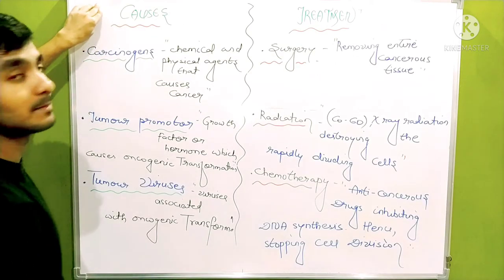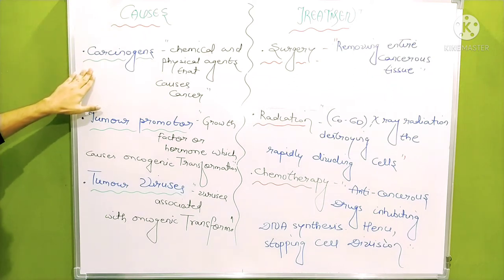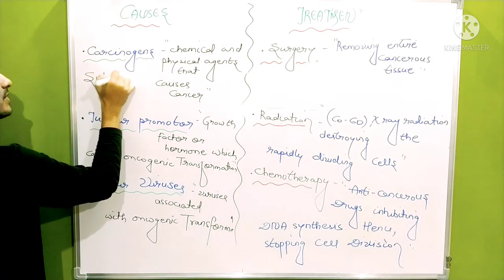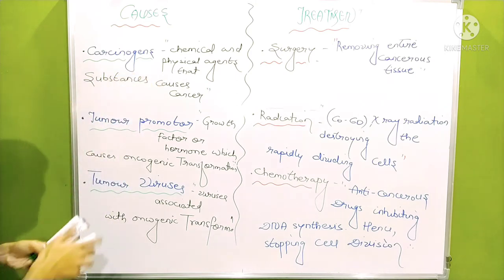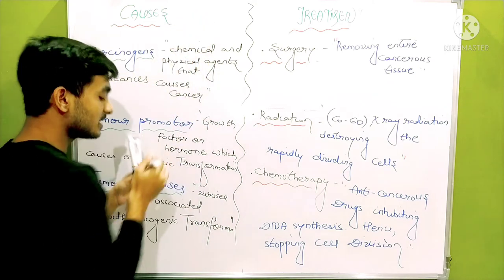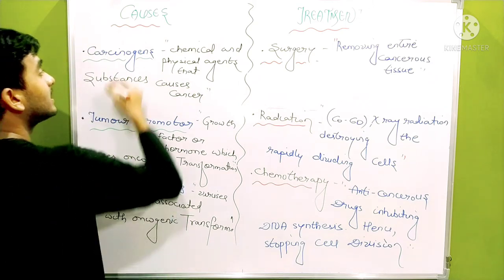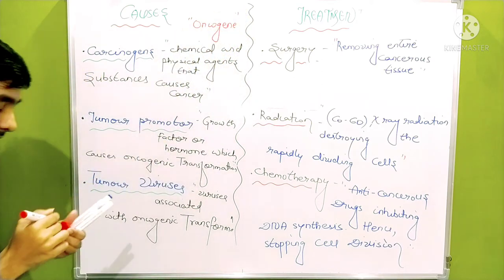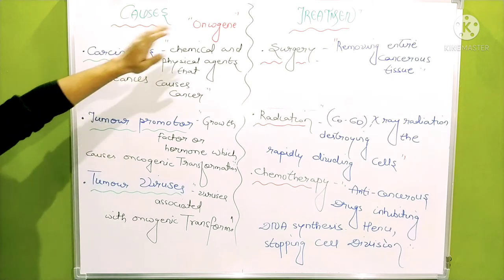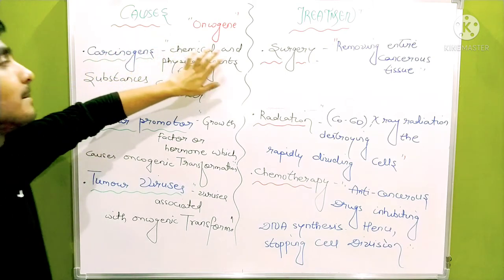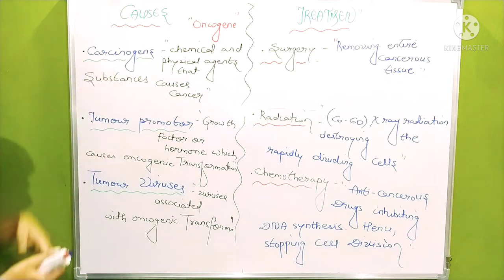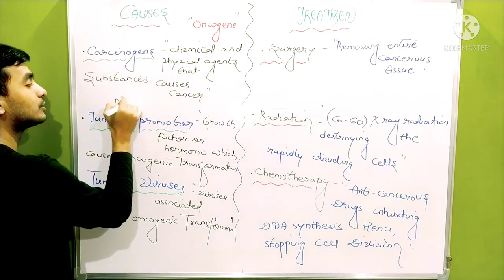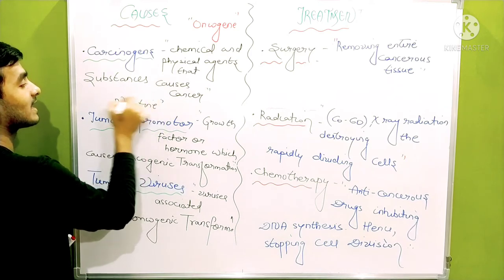Now let's go across causes and treatment. The causes are generally three causes: carcinogens, tumor promoters and tumor viruses. Carcinogens are substances which are responsible for activating the genes incorporated into the human genome responsible for the formation of cancer - the genes which are present in human genome causing cancer are oncogenes. But those substances which activate the oncogenes are called carcinogens. Generally chemical and physical agents that cause cancer are called carcinogens. For example, nicotine which is present in tobacco is generally a carcinogenic substance.